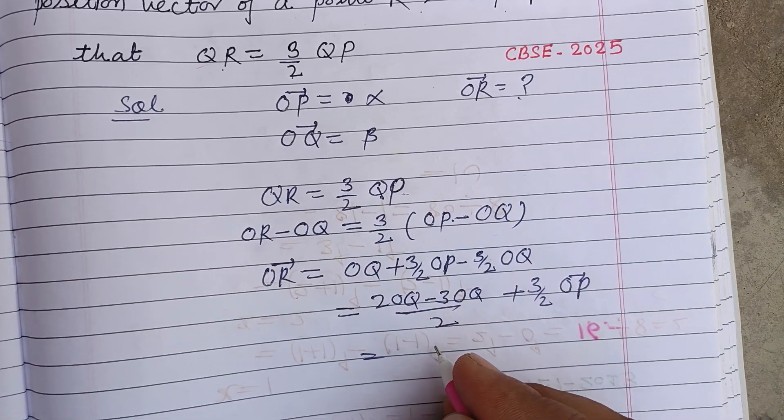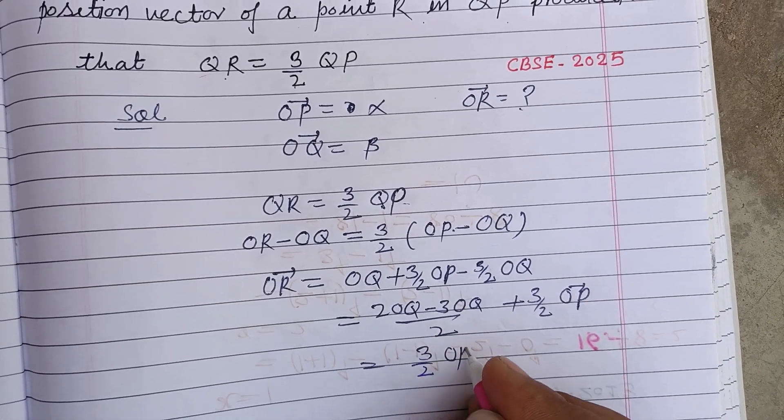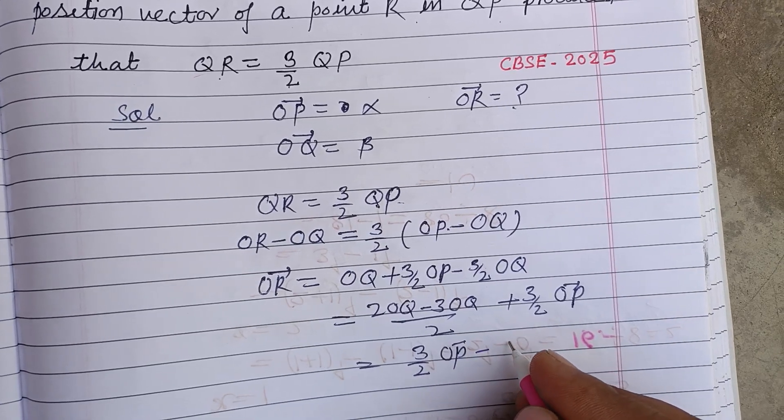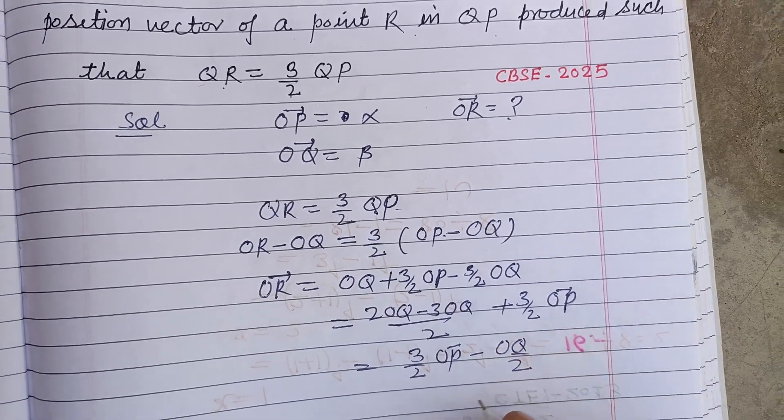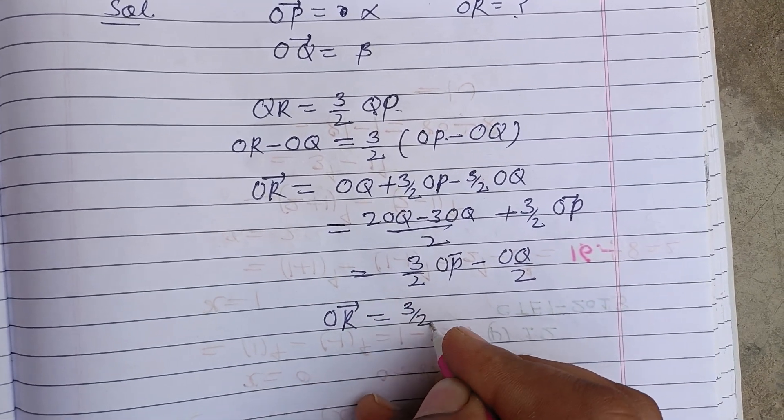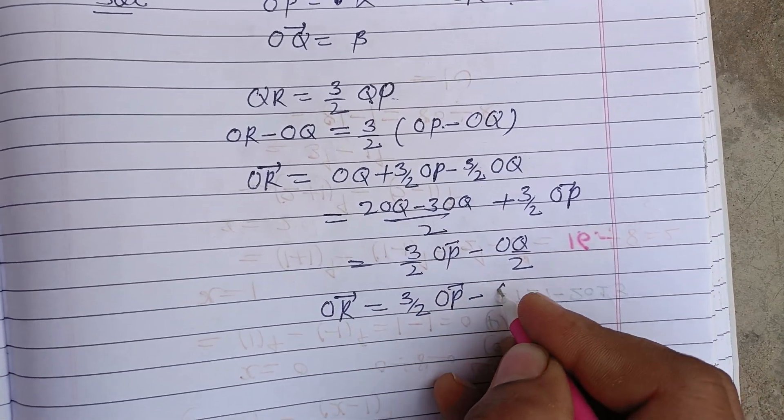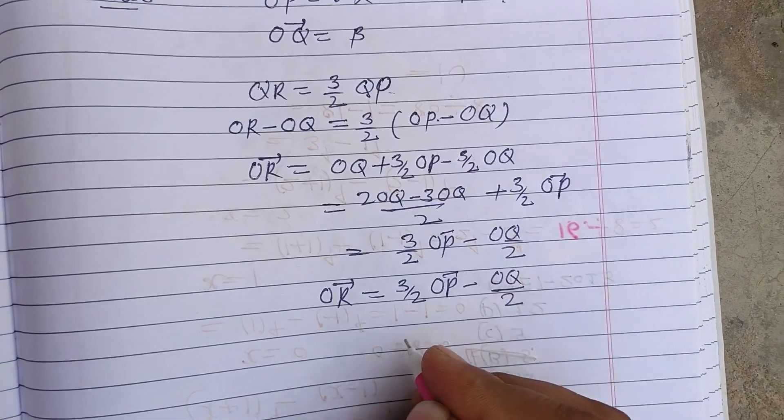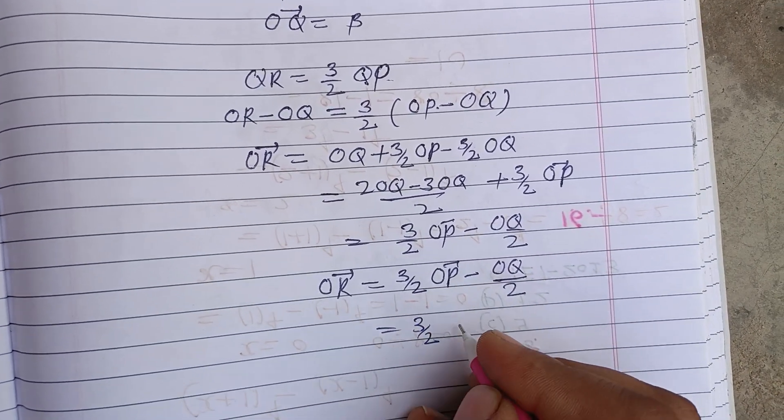This simplifies to three by two OP minus OQ by 2. Now three by two OP is